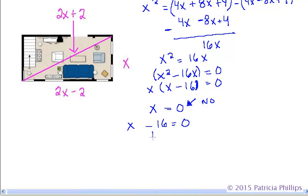We're left with x minus 16 equals 0. You can isolate the x by adding 16 to both sides. You're going to end up with 0 on the left and a positive 16 on the right. So it's looking like x is going to equal 16.